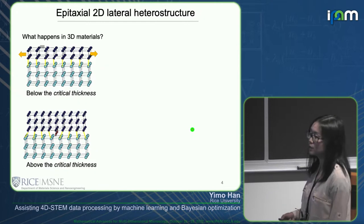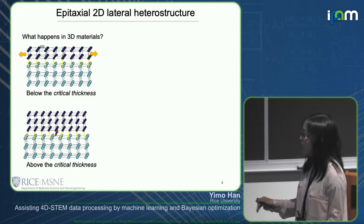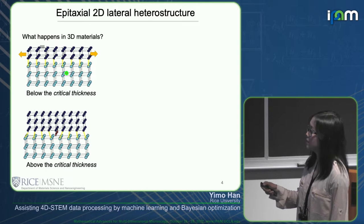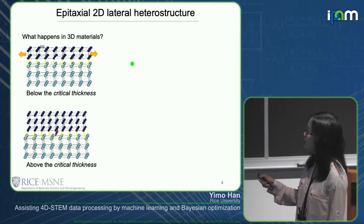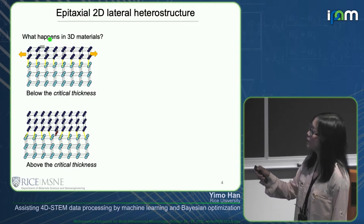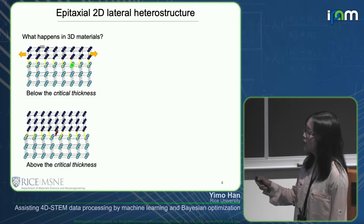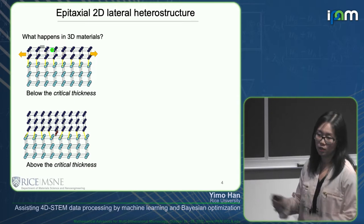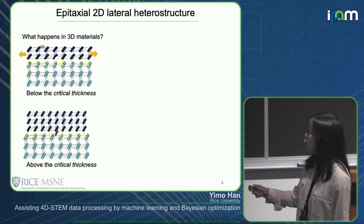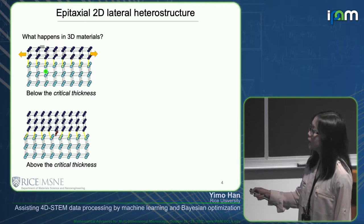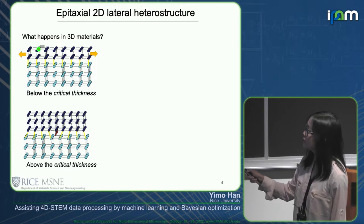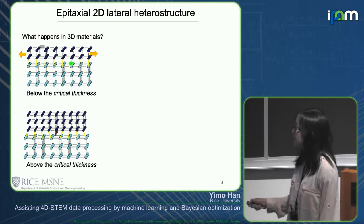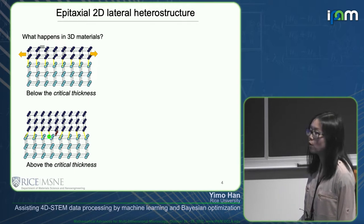For those unfamiliar with epitaxial growth: in 3D bulk materials, a thin film grows on a substrate with dangling bonds. If the film is very thin, it forms a lattice-matched coherent structure under large strain. But as the film grows thicker, the strain energy becomes proportional to thickness, and at some critical point the system relaxes by forming dislocations at the interface.